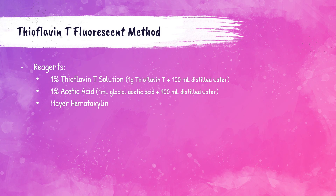Reagents for the thioflavin T fluorescent stain are: 1% thioflavin T solution, prepared by combining one gram of thioflavin T with 100 milliliters of distilled water; 1% acetic acid, prepared by combining one milliliter of glacial acetic acid with 100 milliliters of distilled water; and Mayer's hematoxylin.